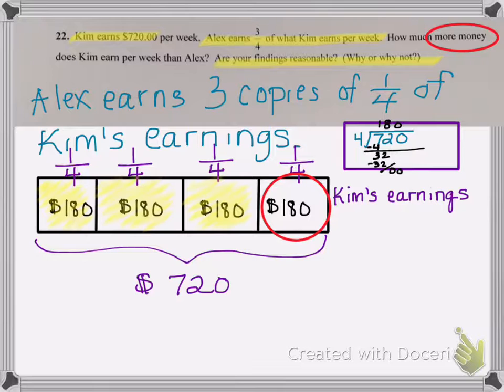So visually, I already have my answer, that Kim earns an extra $180. But I want to make sure we really understand why that is. So let's keep going here.